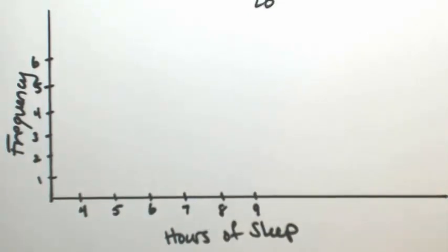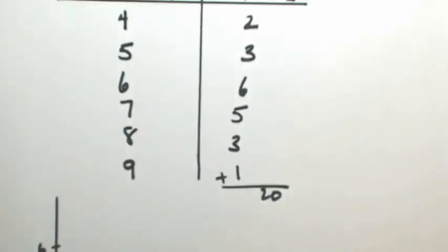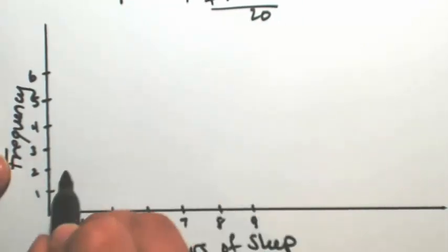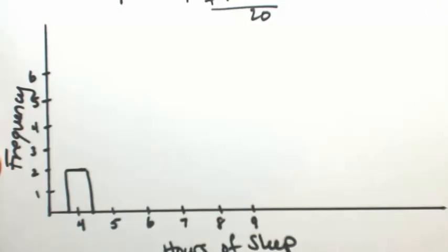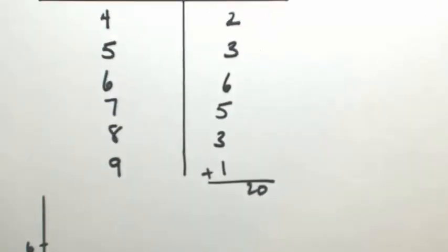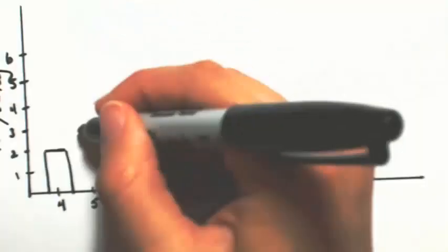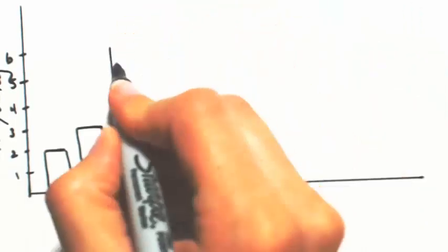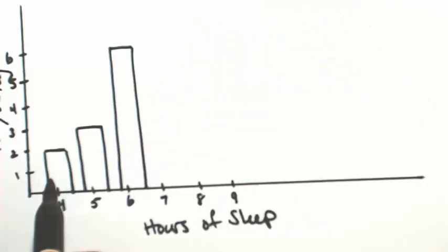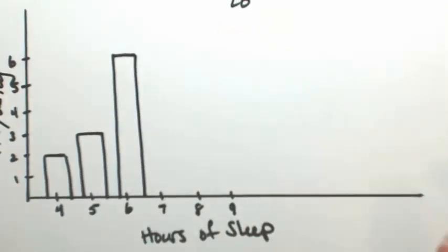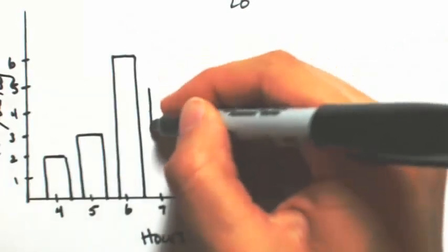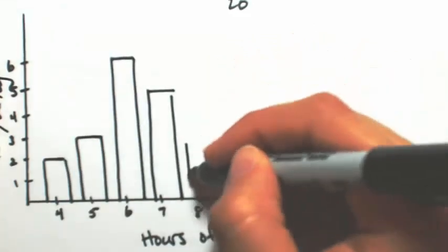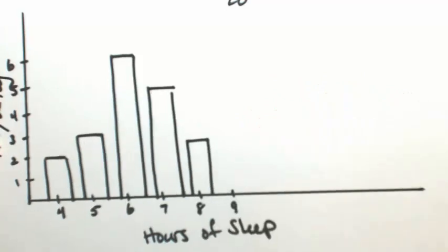Now we're going to draw a bar that represents how many times each value appeared. Looking at our frequency table, 4 appeared twice, so I'm going to draw a bar with a height of 2. At 5, a bar of height 3. At 6, a height of 6. Make sure your bars have the same width as you go through. 7 has a frequency of 5. 8 has a frequency of 3. And 9 has a frequency of 1.